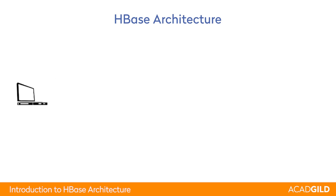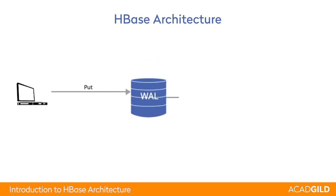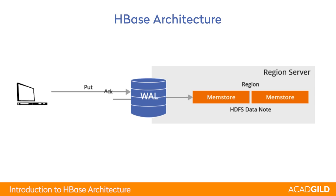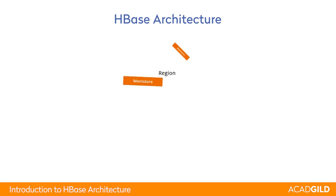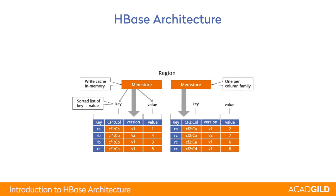Whenever any new entry must be added to the HBase table, it first needs to be added to the write-ahead log, then to the memstore, and finally an acknowledgement is sent back to the client. Write-ahead logs are very important for failure recovery and to replay back the state of the memstore. However, you can choose to disable the write-ahead log if you think the data is not important and you can tolerate data loss — this can improve throughput. Whenever the memstore becomes full, it flushes the changes in the form of HFiles, which is known as the flush activity. HFiles are a sorted list of key-value pairs.